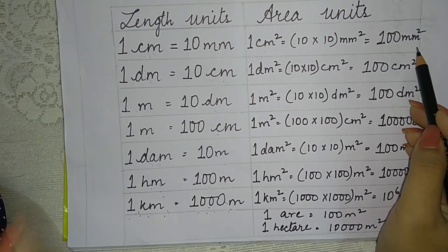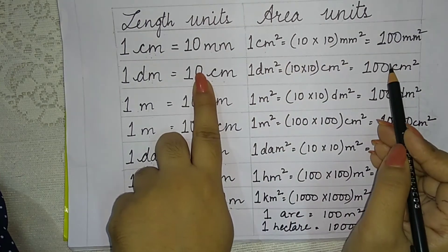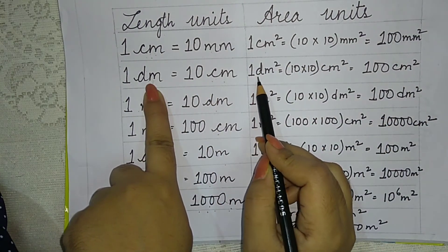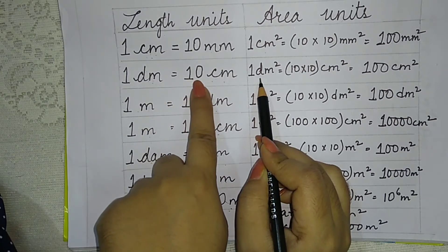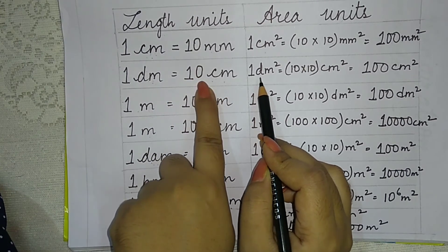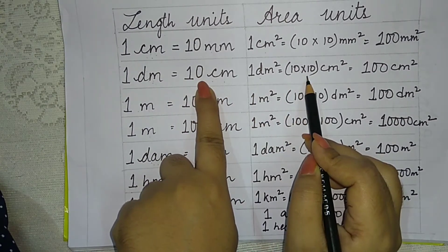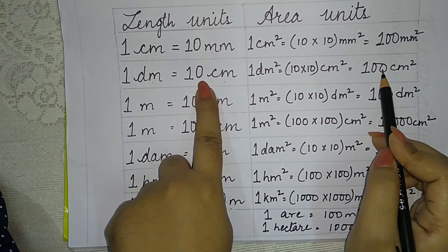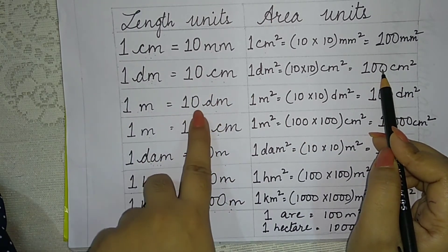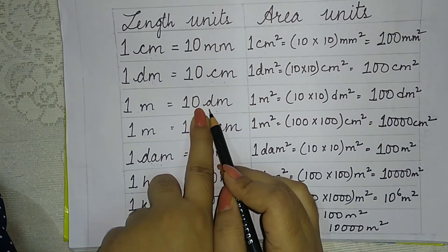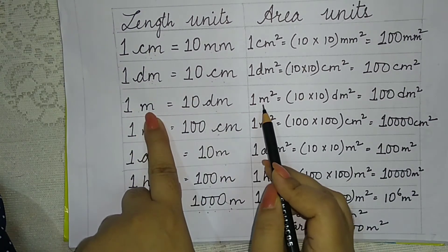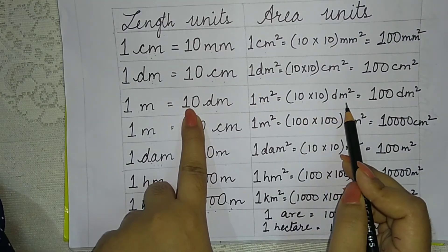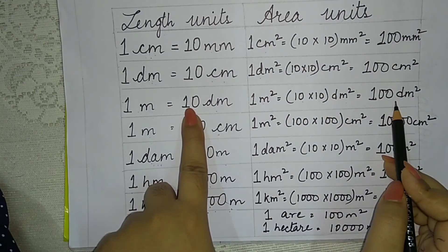Whatever is equal in length, you square it for area. 1 decimeter square: since 1 decimeter equals 10 centimeters, 1 decimeter square equals 10 into 10 centimeter square, which is 100 centimeter square. Similarly, 1 meter equals 10 decimeters, so 1 meter square equals 10 into 10 decimeter square, which is 100 decimeter square.